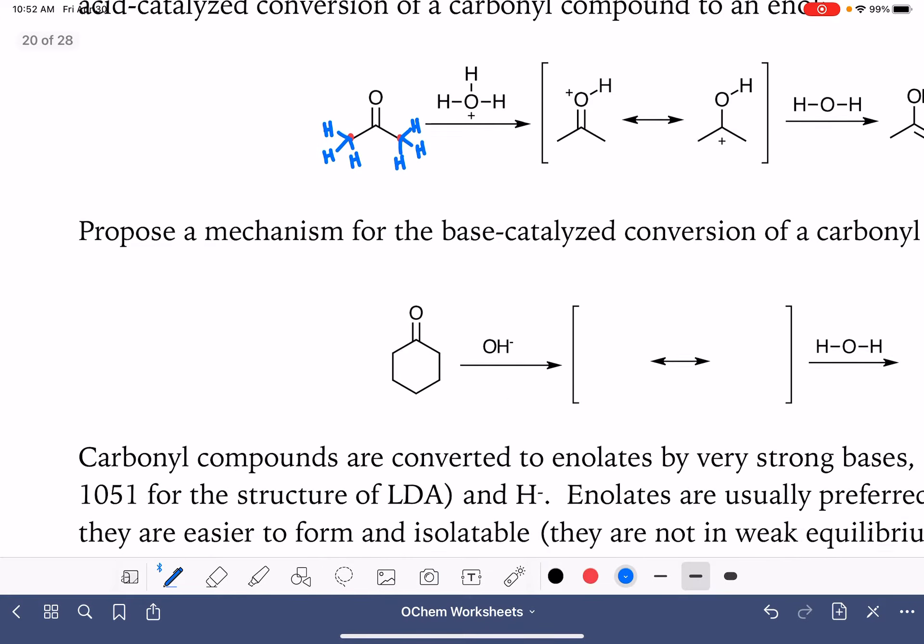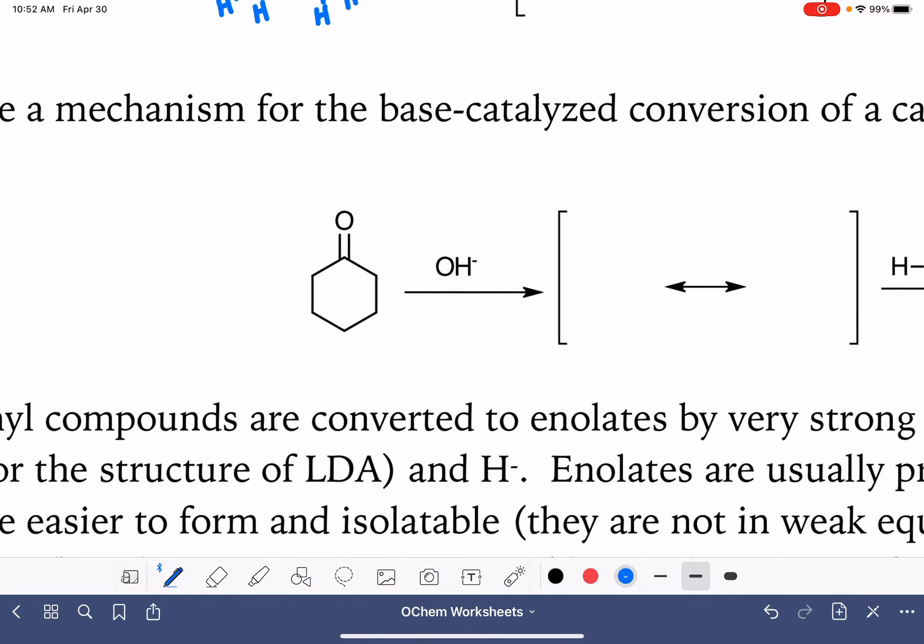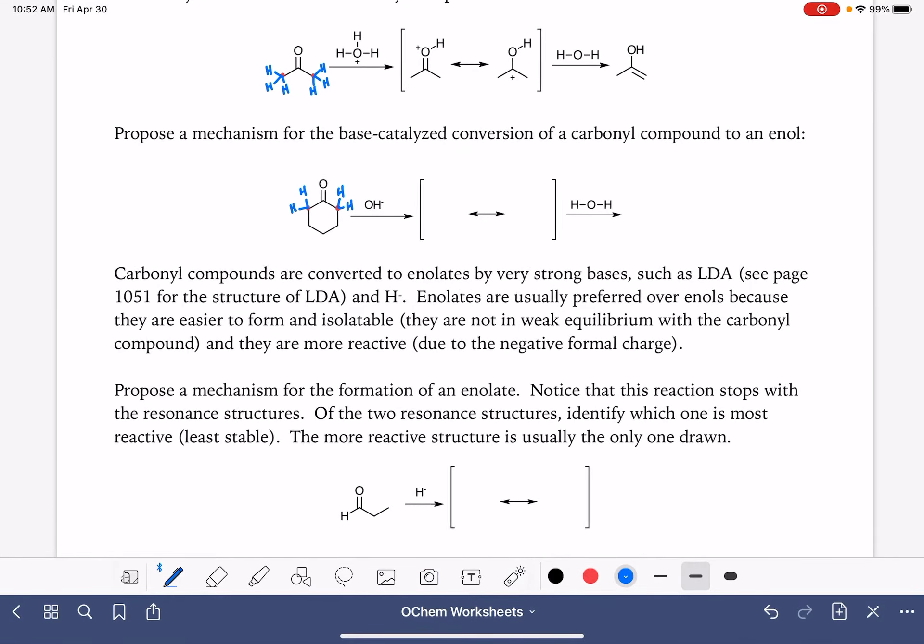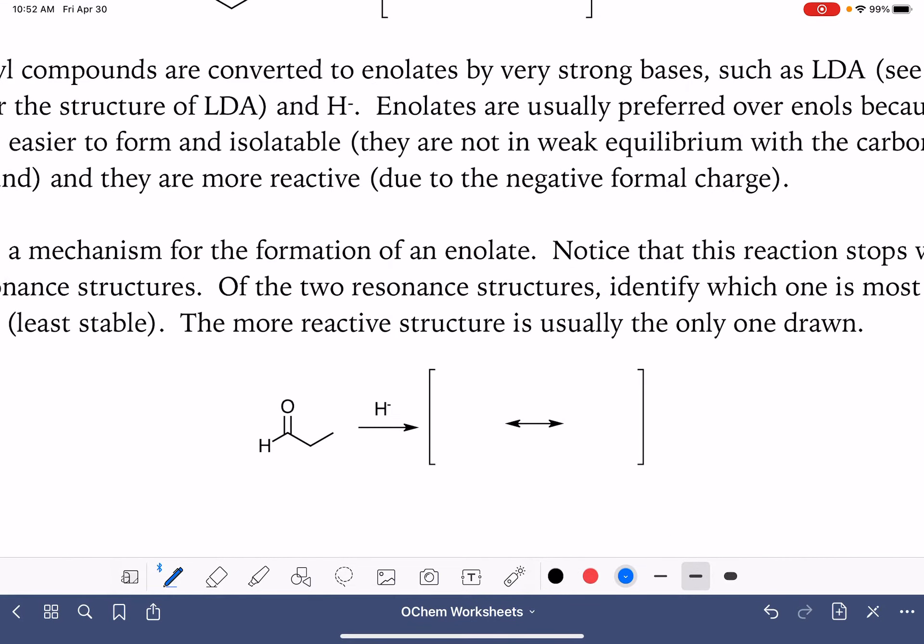And I think we have two more that we can work on. Here is another, this is also a ketone. It has two alpha carbons. It has a total of four alpha hydrogens. And then last but not least, one alpha carbon and two alpha hydrogens.